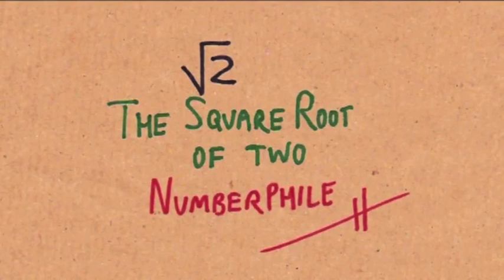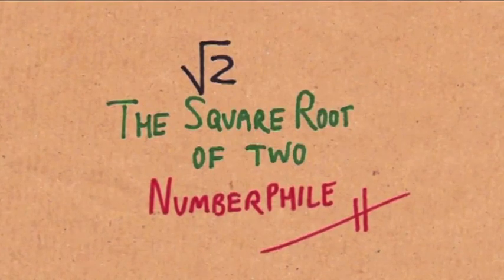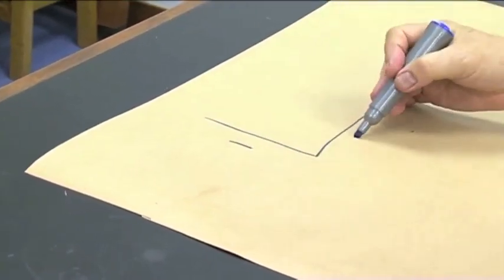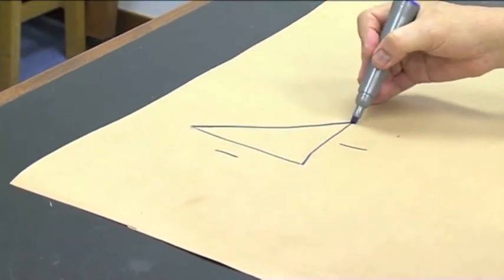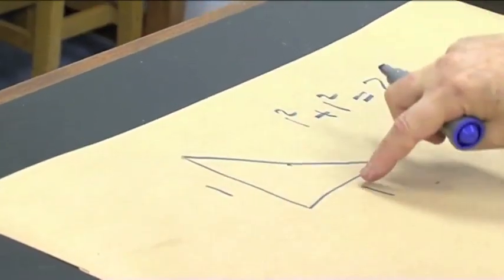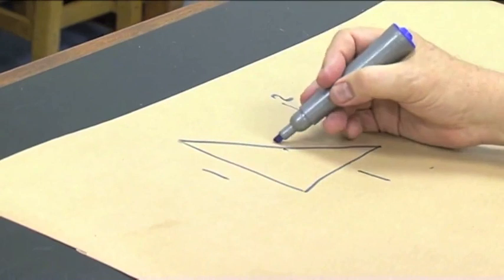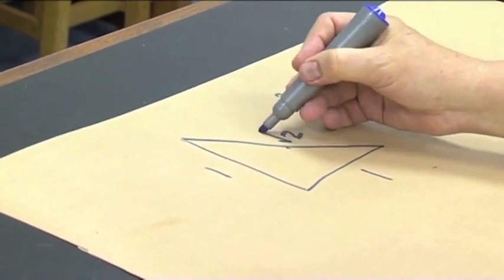The square root of 2 is about 1.4. It's the number you get if you work with Pythagoras' theorem, which says that if you have a unit length along there and a unit length along there, the square of this length plus the square of that length equals that, so this length is root 2, the square root of 2.